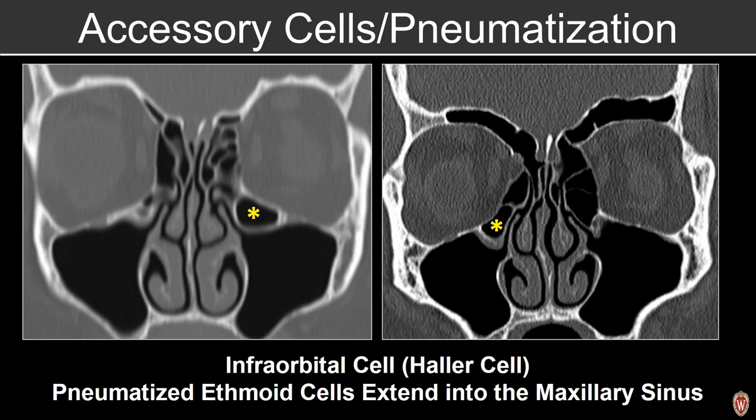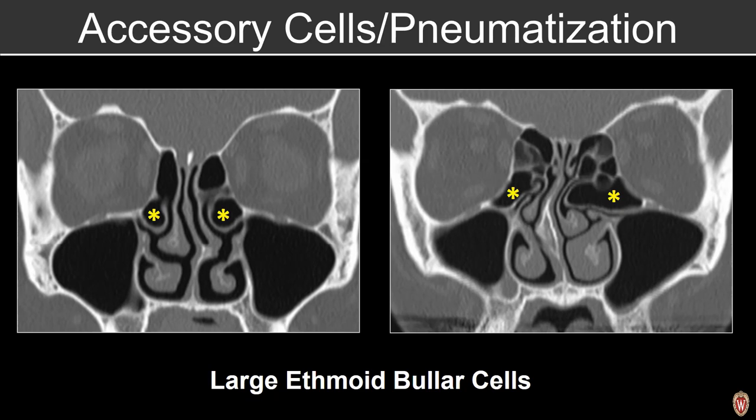We'll often see infraorbital air cells referred to as Haller cells, and it's important to comment on those, particularly if they cause compromise of the osteomeatal unit. We'll often also see large ethmoid bulla cells, and again we'll want to comment on those if they're causing compromise of the osteomeatal unit. Here we can see near complete horizontal orientation of the uncinate and the infundibulum.